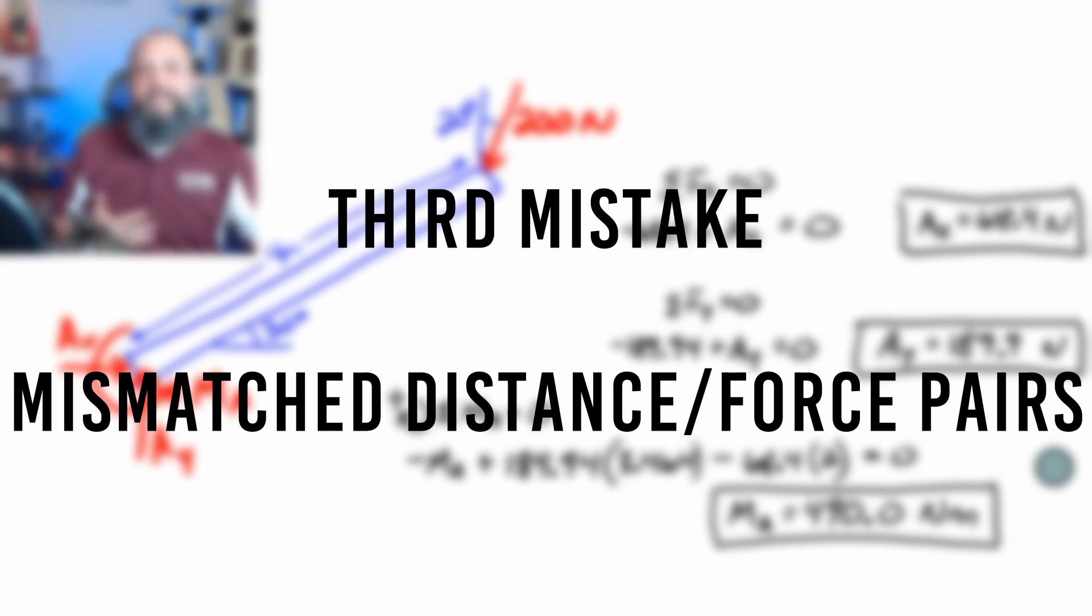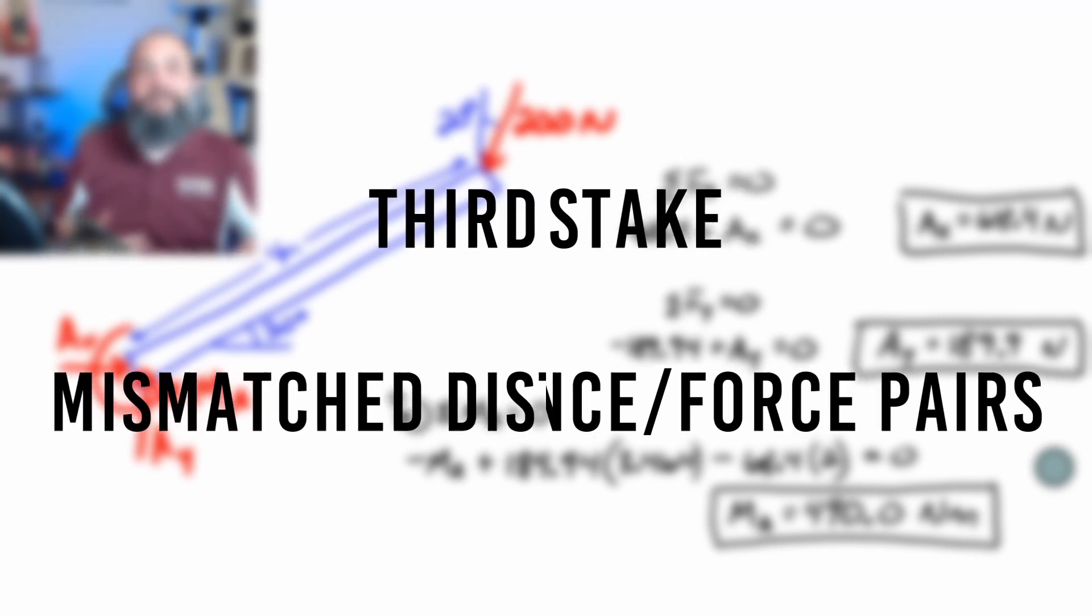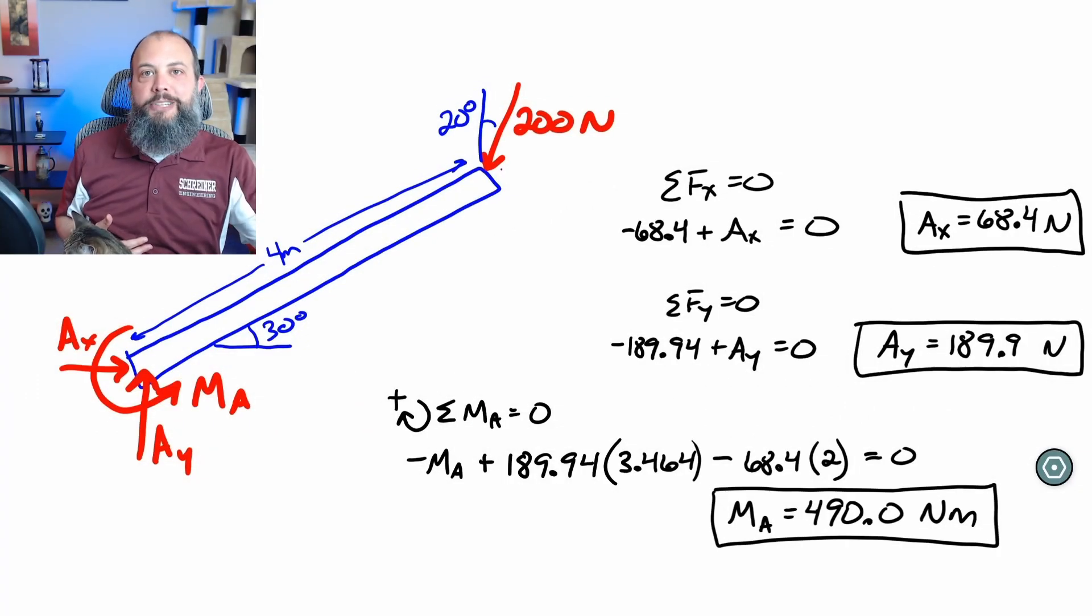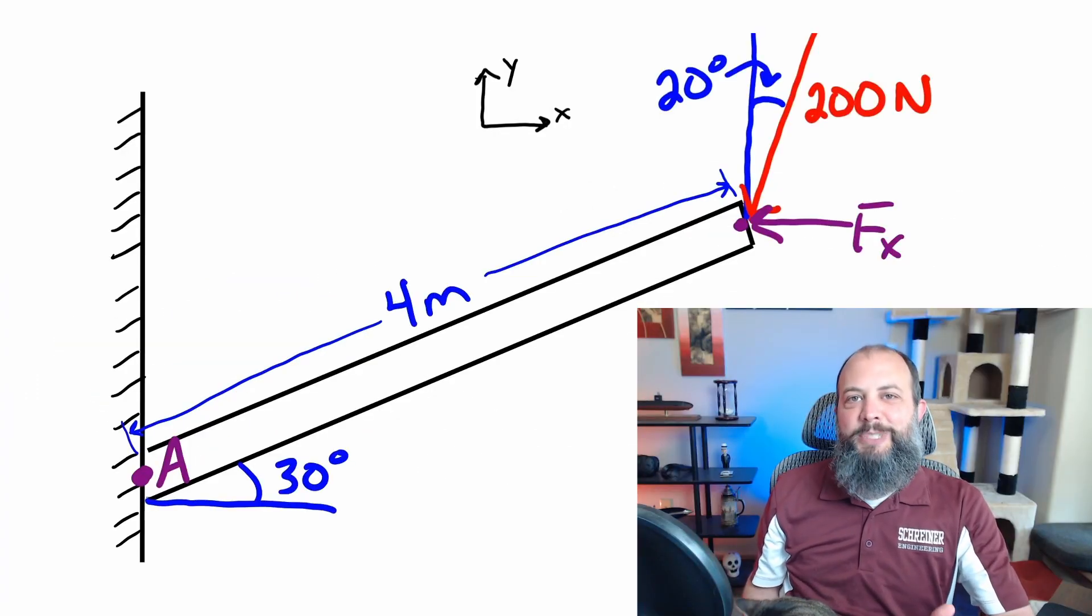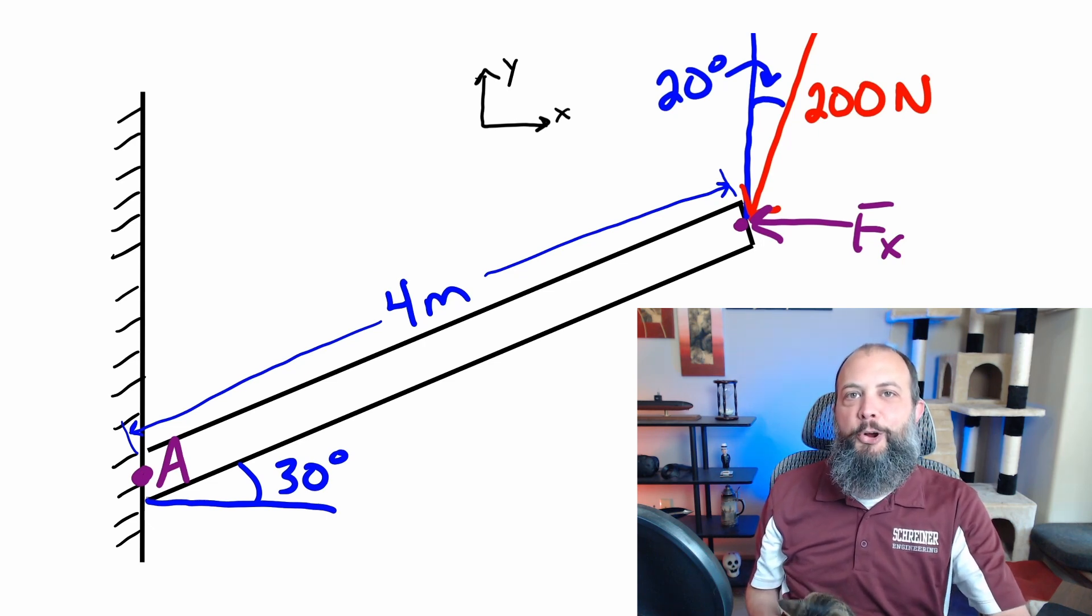So an extremely common mistake is to use the X component force with the X direction distance instead of the Y direction distance. And so the way to avoid making the mistake as to which distance to use is to not draw a small little arrow like I've drawn here.